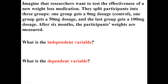So the question here is: what is the independent variable, and what is the dependent variable? The independent variable is dosage, because that is what is being manipulated — either they're getting zero, 50, or 100. And the dependent variable is weight, because that's what they're measuring.